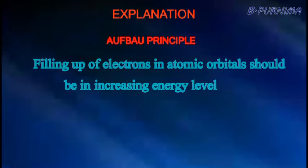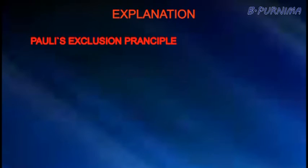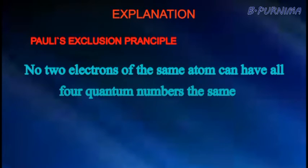Explanation: The AFPA principle states that filling up of electrons in atomic orbitals should be in increasing energy level. Hund's rule states that electron pairing in orbitals starts only when all available empty orbitals of the same energy are singly occupied. Pauli's exclusion principle states that no two electrons of the same atom can have all four quantum numbers the same.